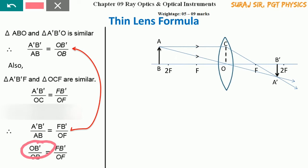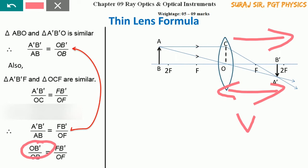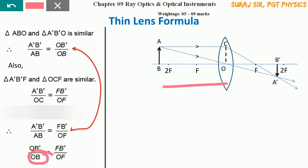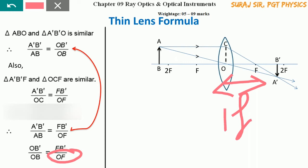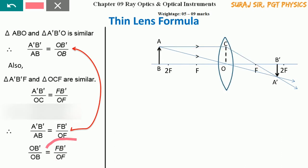The segment OB' is your image distance and lies to the right-hand side of the lens — so by sign convention it is positive. OB is your object distance and lies to the left-hand side of the lens — so it holds a negative sign. The segment OF is the focal length of the convex lens; since the convergence of a parallel beam is to the right, the focal length of a convex lens is always positive.